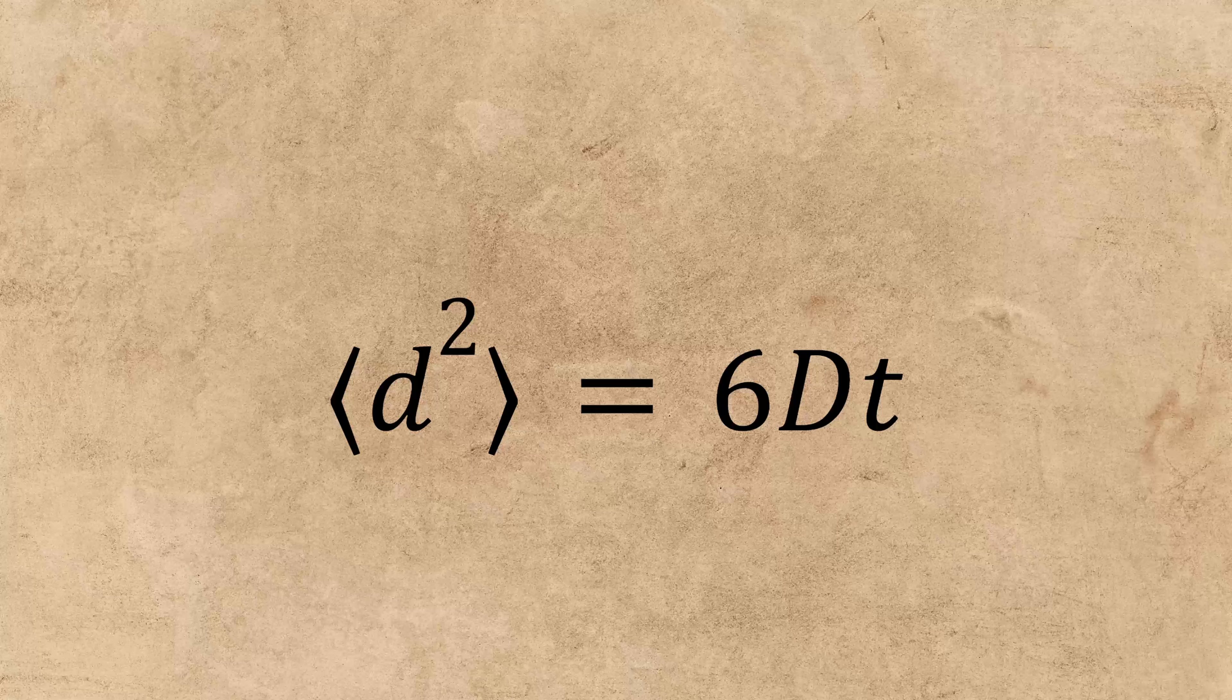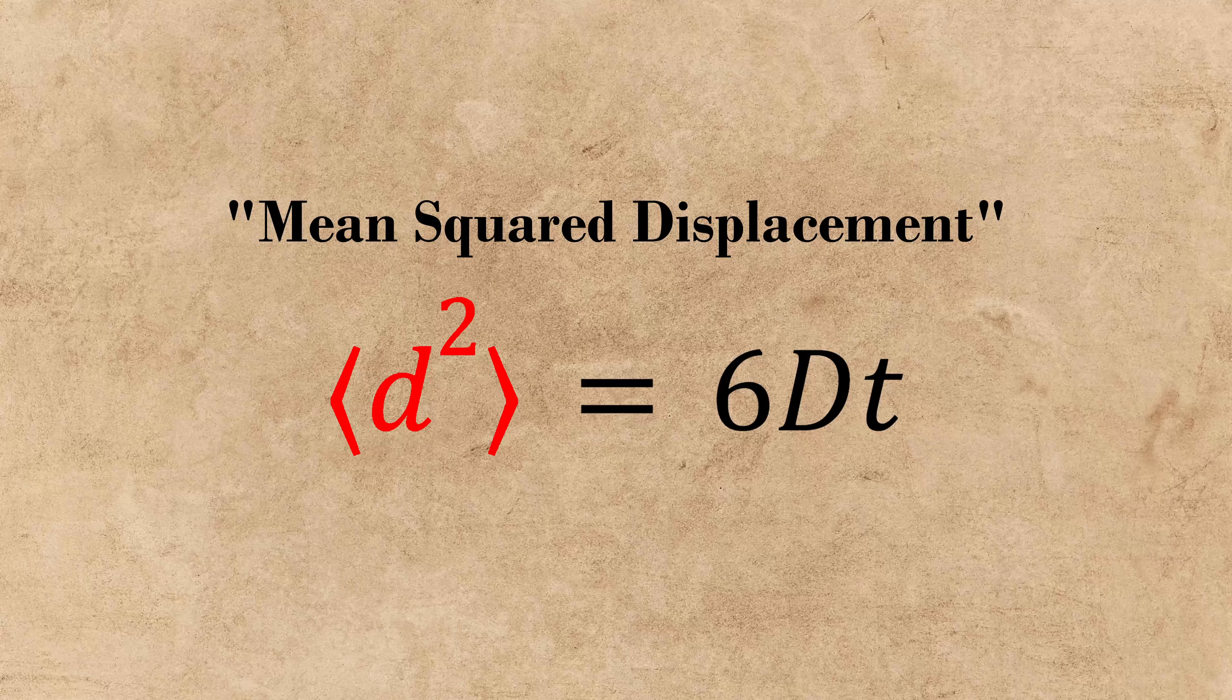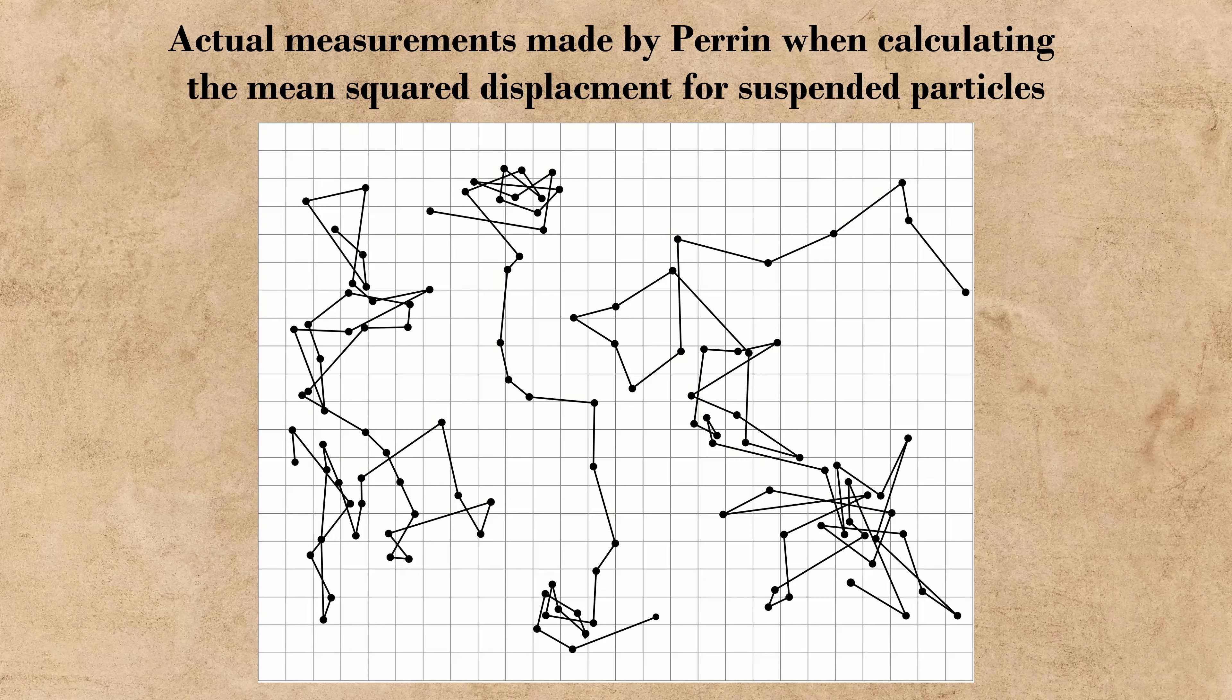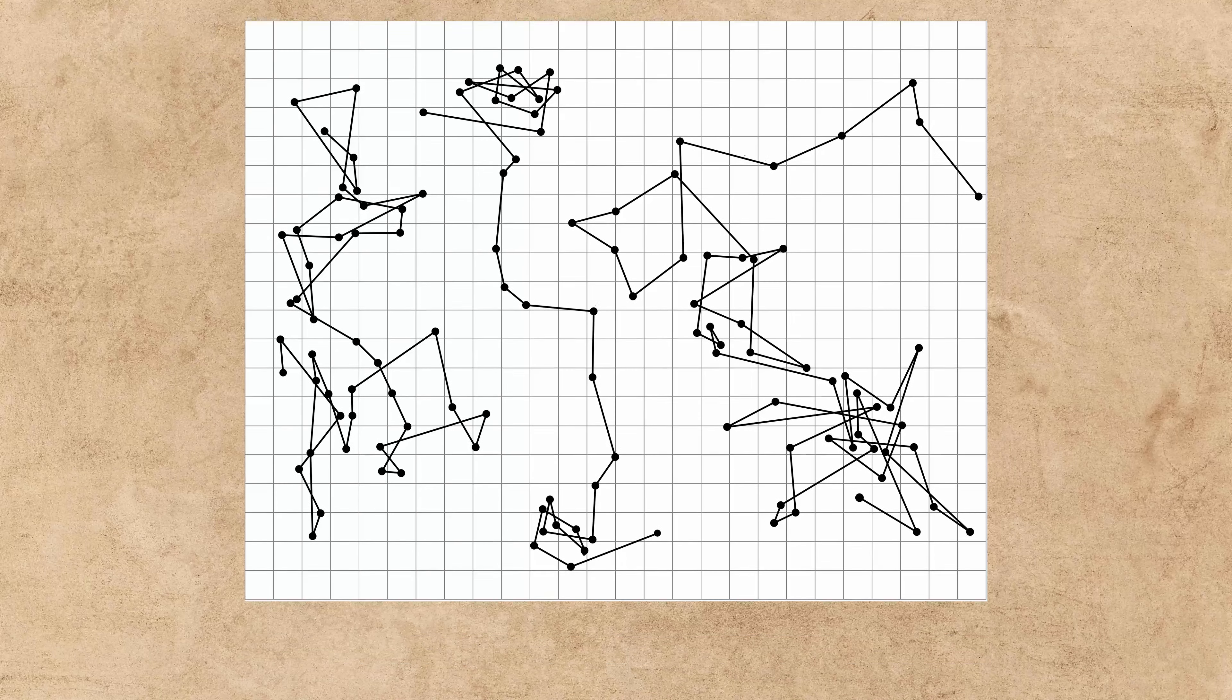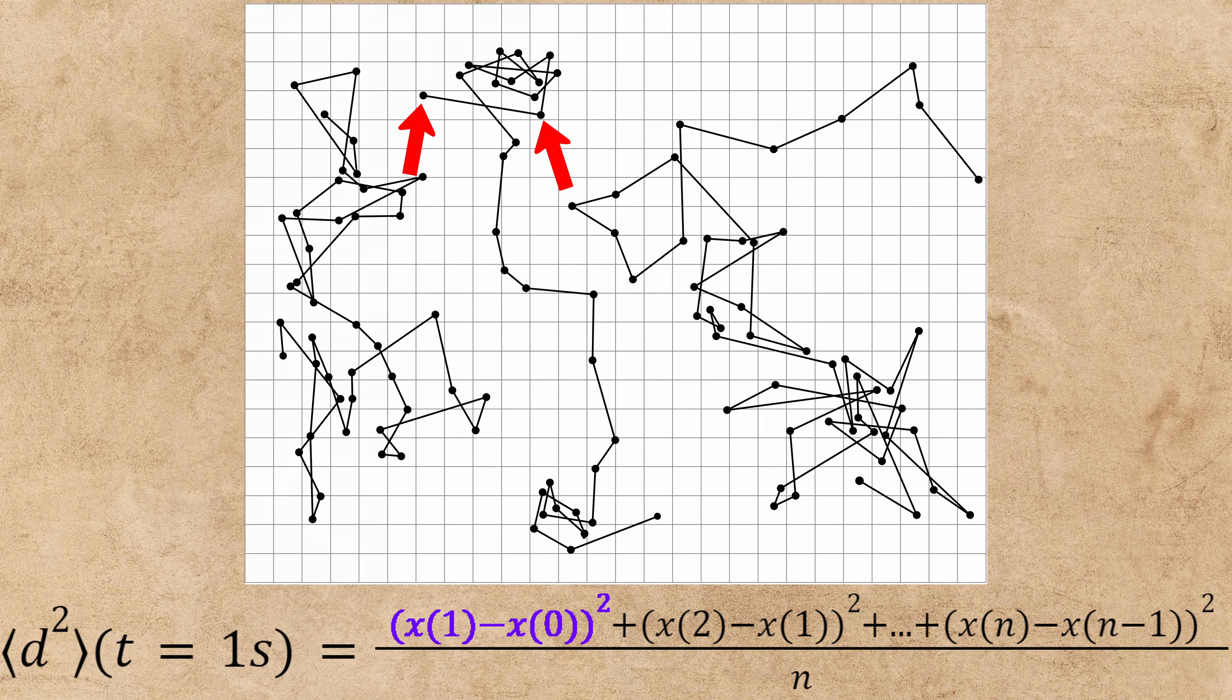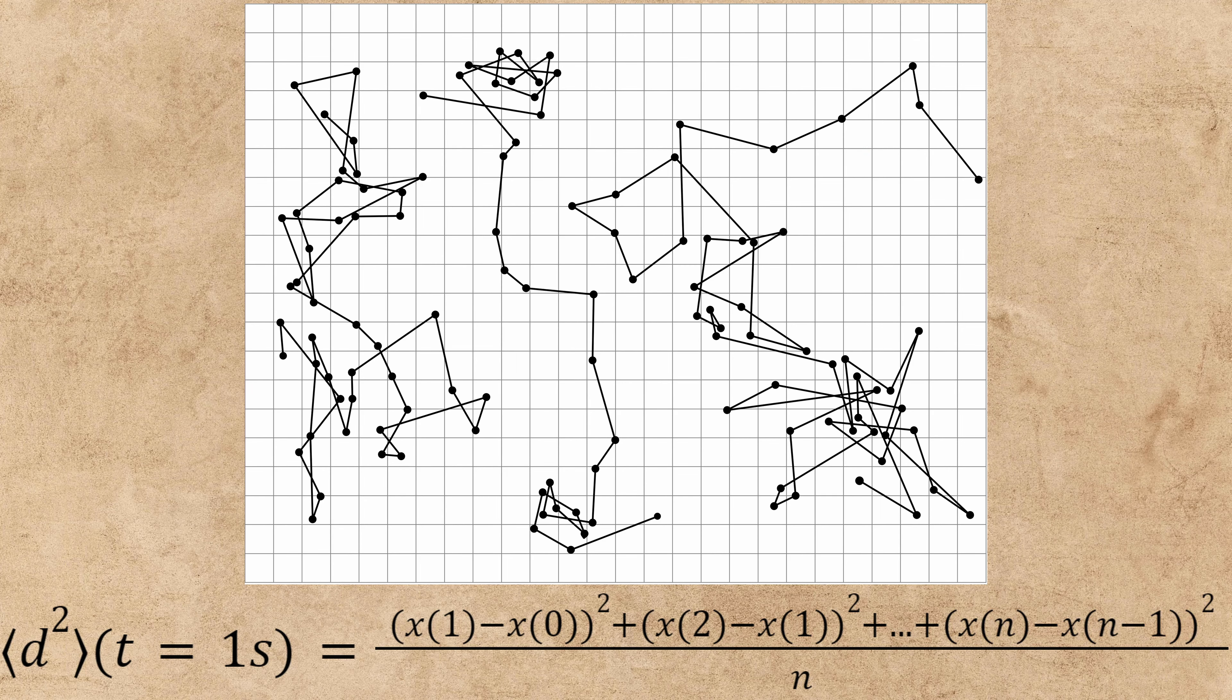This relation uses what is called a mean-squared displacement to represent the deviation of position with respect to time. It is calculated after measuring the position of a point, in this case a suspended particle, at specific steps of time. After taking measurements, the mean-squared displacement is calculated by taking the distance in space the point has traveled in each step of time, squaring it, adding up these values for each time step, and dividing by the number of steps taken.